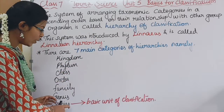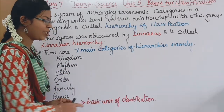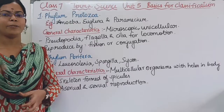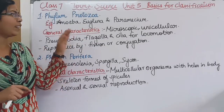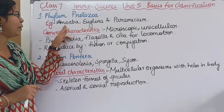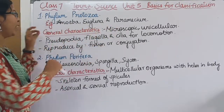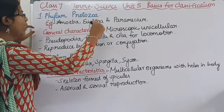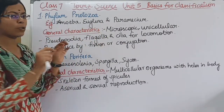Species are the basic unit of classification. The first division is Protozoa. For example, Amoeba, Euglena, and Paramecium. This is a general characteristic: Protozoa are microscopic organisms.